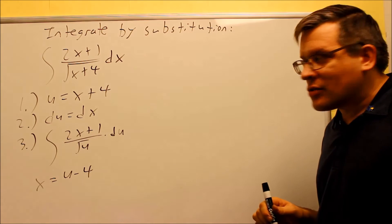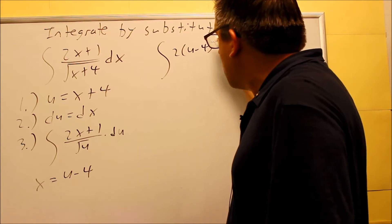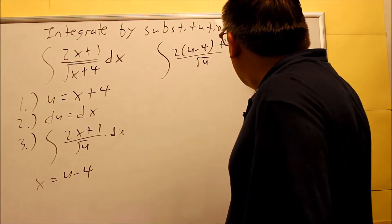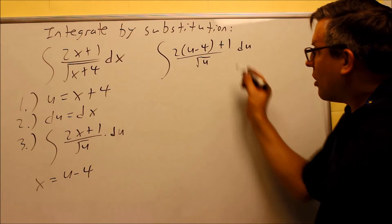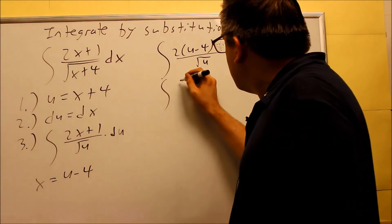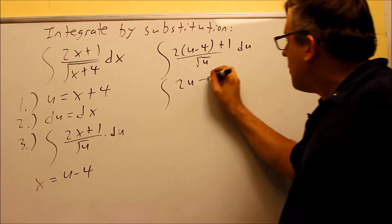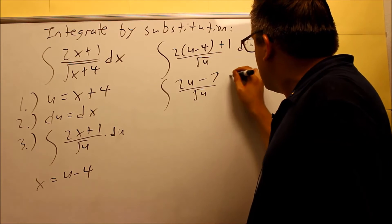So now, I'll put this in place of the X inside there, and I'll get 2 times U minus 4 plus 1 all over the square root of U, and I still have the DU over here. Now I've changed it all into U's, so I'm going to multiply that out on top. I'm going to get 2U minus 8 plus 1 is going to be a minus 7 there, and all this is going to be over square root of U and then DU.